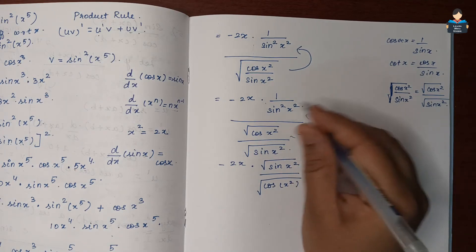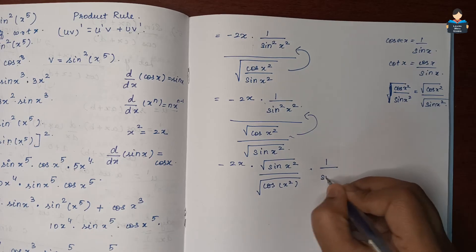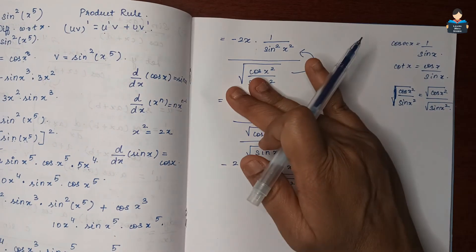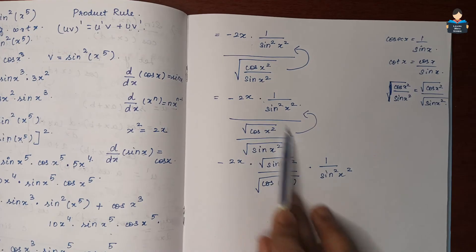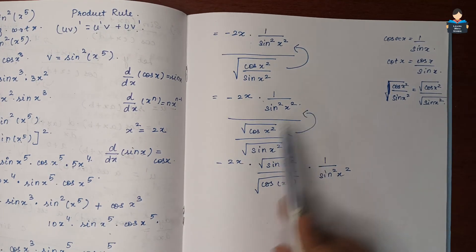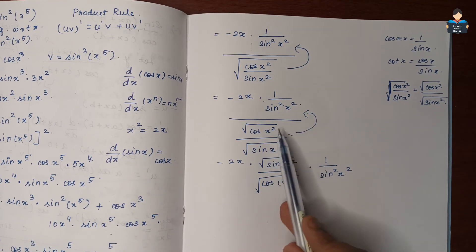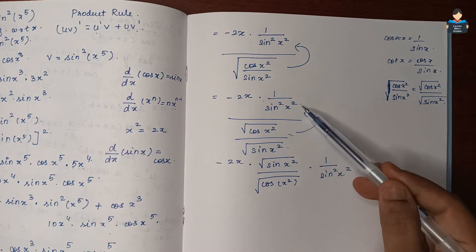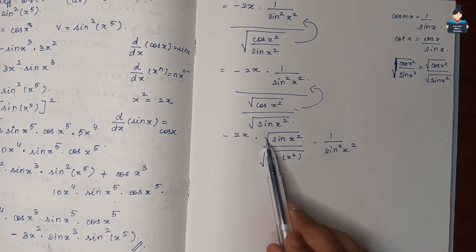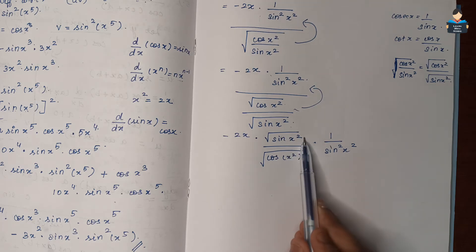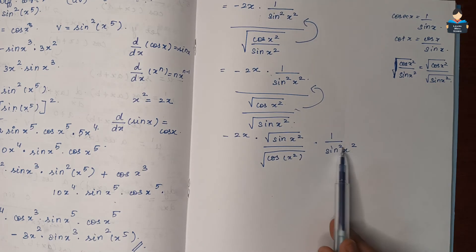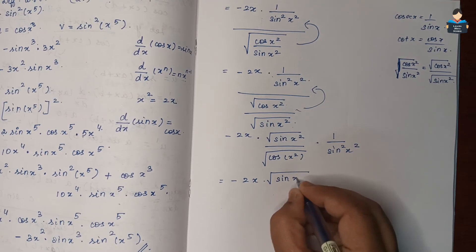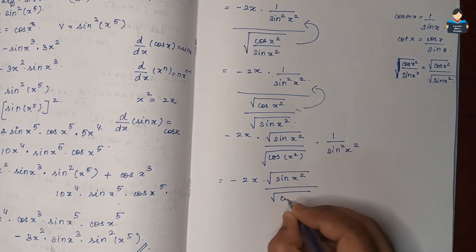We invert the denominator and simplify. Bringing sin²(x²) to the numerator and taking reciprocal of √(cos(x²)/sin(x²)), we get √(sin(x²)/cos(x²)). So the expression becomes minus 2x times √(sin(x²)) divided by (sin²(x²)·√(cos(x²))).